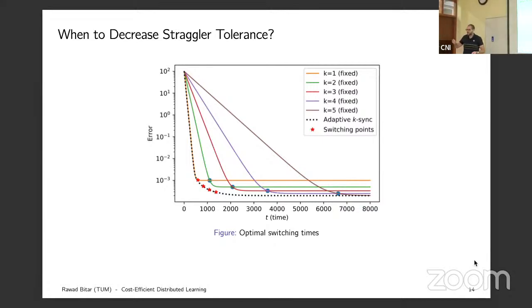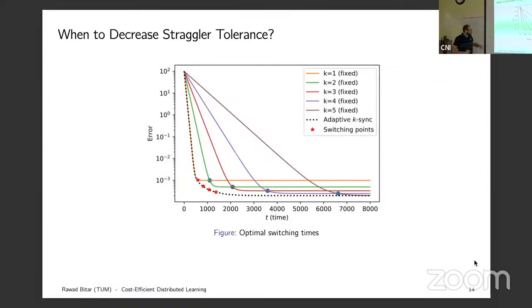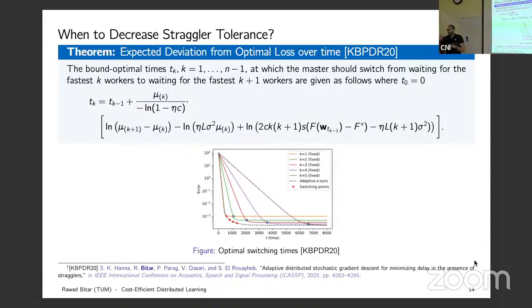We derived a formula for the theoretical optimal switching times — at time t_k, switch from k to k+1 when a certain condition is satisfied. This is nice and easy theoretically, but Ankit raises the point: how do you do this heuristically? In practice you don't know the Lipschitz constants and other parameters. Heuristically, instead of computing which is fastest, I detect the phase transition — detecting when the error floor is hit and then moving to k+1.